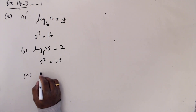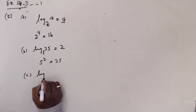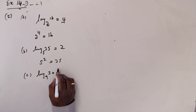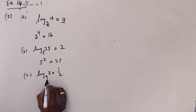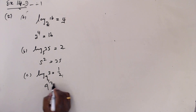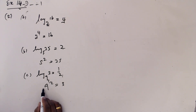C: log base 9 of 3 equals half. So what is the base now? This is the base, this is the power. So 9 to the half is 3. Which is right — square root of 9 is 3.